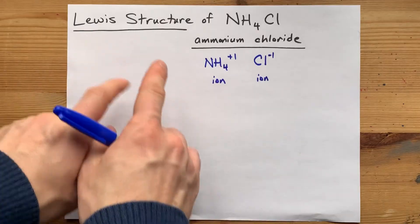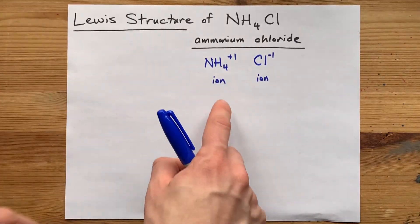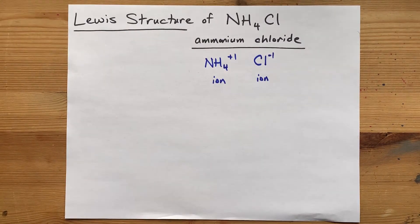So we're going to have an ionic Lewis structure. And inside of the square brackets that we put Lewis structure ions inside of, we're going to have covalent bonds.